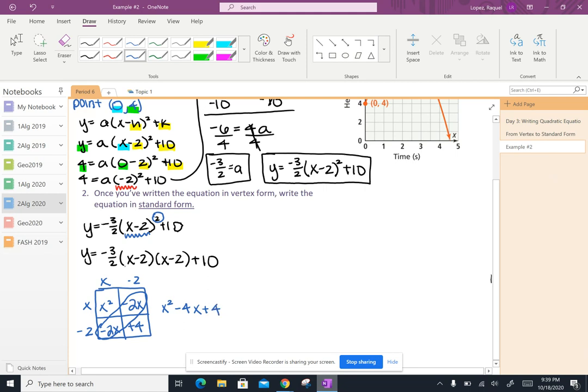So I'm going to replace x minus 2 times x minus 2 with x squared minus 4x plus 4.